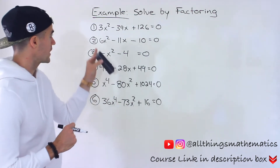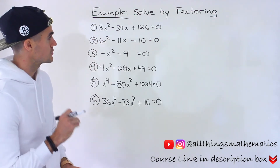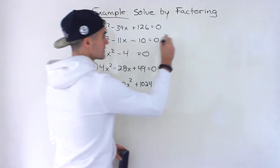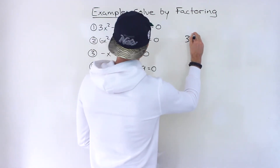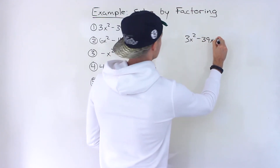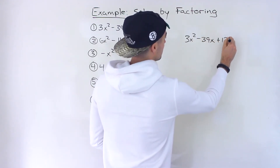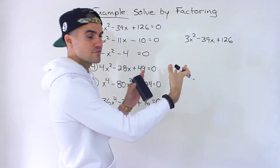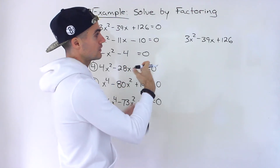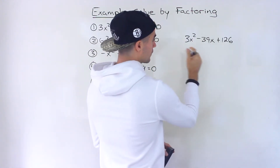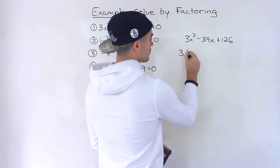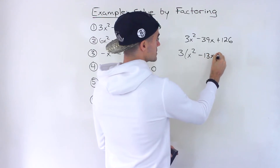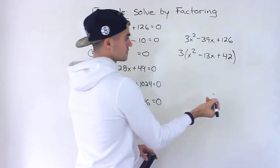Starting with number one, we have 3x squared minus 39x plus 126 equals zero. I'm going to factor that left side, so let's rewrite it: 3x squared minus 39x plus 126. The first thing I always check is whether I can factor anything out. Notice that 3 is a common factor with all these terms, so we take out a 3 and we're left with x squared minus 13x plus 42.